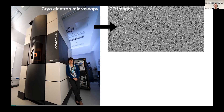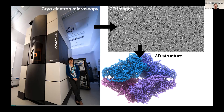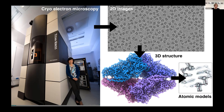We combine these two-dimensional images computationally to make three-dimensional structures. This works in much the same way that a CT scan uses 2D X-rays to generate a three-dimensional representation of the human body. These 3D structures have details about the placement of every atom within the protein, so we are able to build atomic models, really allowing us to visualize the chemistry of life. This is really important because it tells us how these proteins work and how they go wrong in disease. In some cases, it allows the design of new drugs or treatments.